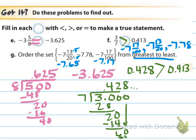Alright, for E, I had to do top dog in the dog house. And I found that it was going to be negative 3.625, which is equal to negative 3.625. So that was equal to.